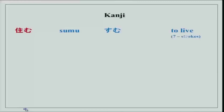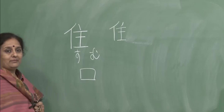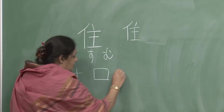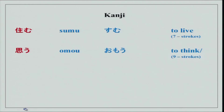Then we have omou — to think — which we did just now as omoimasu. This character combines kuchi (mouth) and to (ten/juu). It is 1, 2, 3, 4, 5 strokes — a 9-stroke character. This means omou — to think.